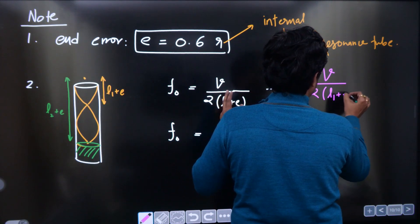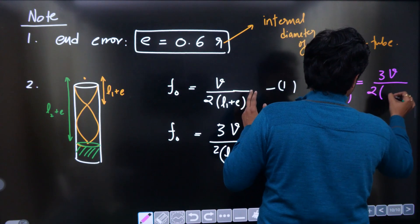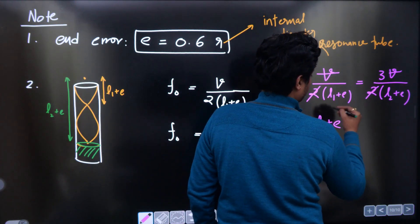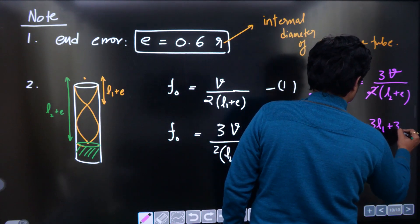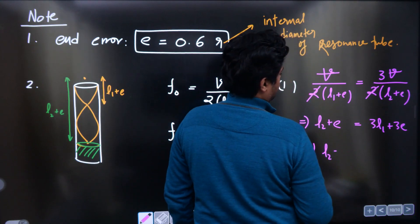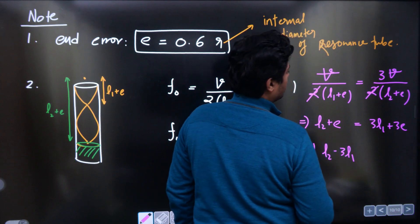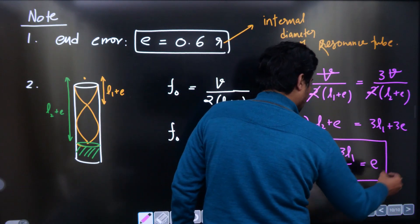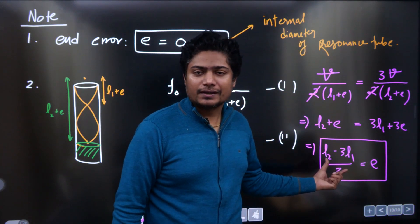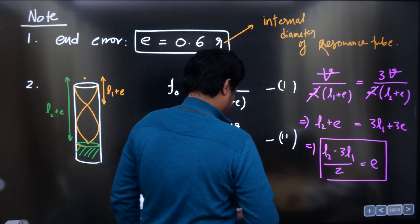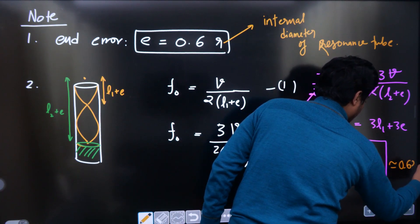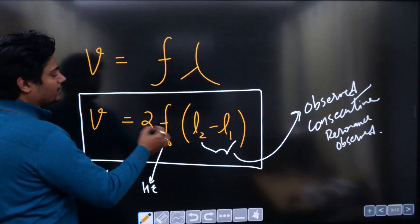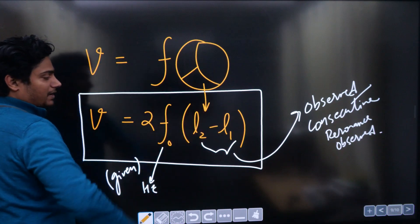Equating: v / 2(l₁ + e) = 3v / 2(l₂ + e). Cancelling common terms: l₂ + e = 3(l₁ + e), which gives l₂ + e = 3l₁ + 3e, so e = (l₂ − 3l₁) / 2. This lets you determine the end error from observed values l₁ and l₂, and when you verify it should come out to approximately 0.6r. You can also directly remember the formula: speed v = 2f(l₂ − l₁), since wavelength equals 2(l₂ − l₁).